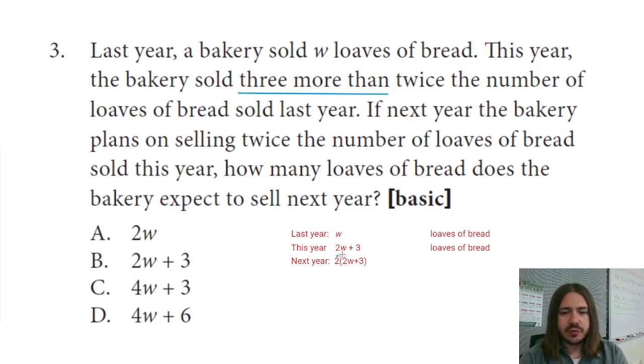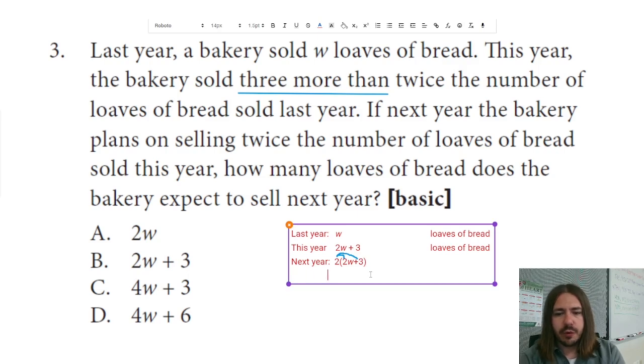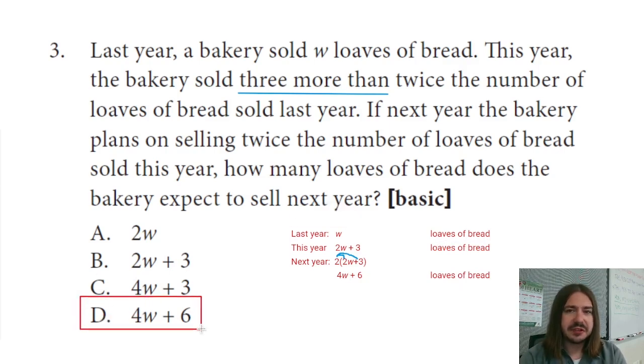Specifically, we're going to distribute the 2. Okay, and that means we're going to multiply 2 by both 2W and 3. So 2 times 2W is going to be 4W. And then 2 times 3 is 6. This is going to give us the simplified form of the expression. So it's this many loaves of bread. So 4W plus 6 is our answer. And we can see that that's answer choice D.